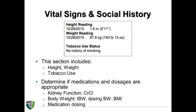The vital signs and social history section of the pharmacist discharge handoff communication template provides information such as height, weight, and tobacco use. This information can be useful to determine creatinine clearance, ideal body weight, or adjusted body weight to appropriately calculate medication doses. This section may be useful to evaluate whether the patient's medications and doses are appropriate based upon their kidney function and body weight. Also, if it is noticed that the patient is a current smoker and there are no smoking cessation medications listed on the patient's medication list, appropriate smoking cessation counseling can be provided to the patient.